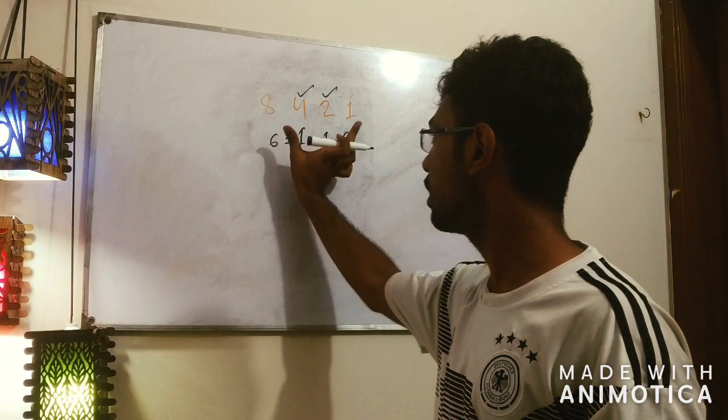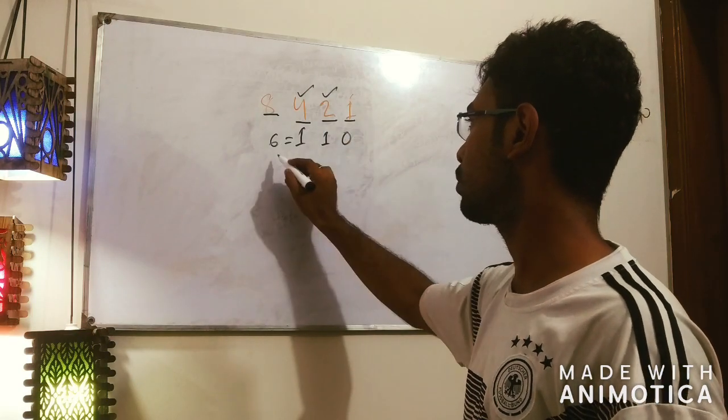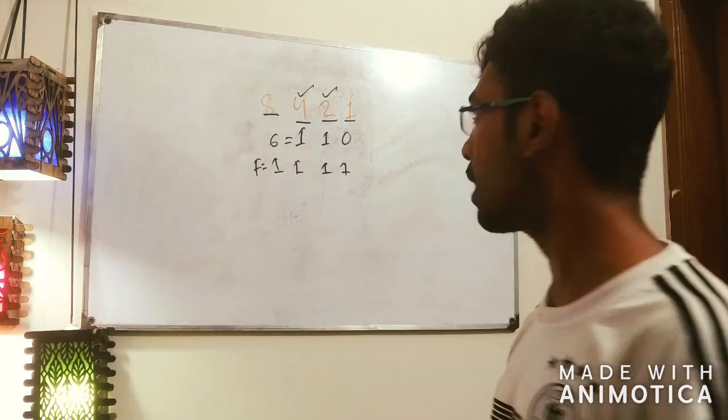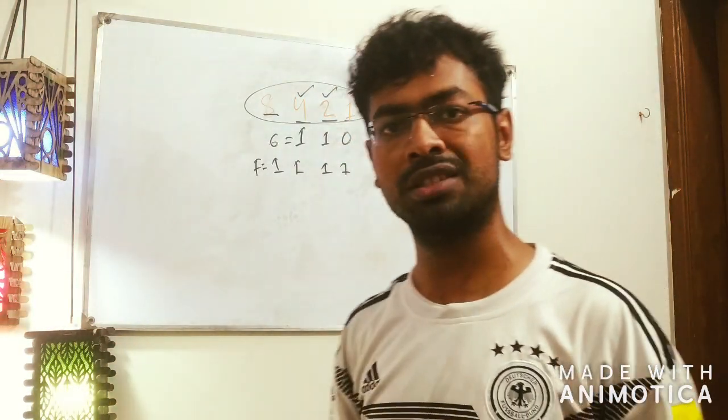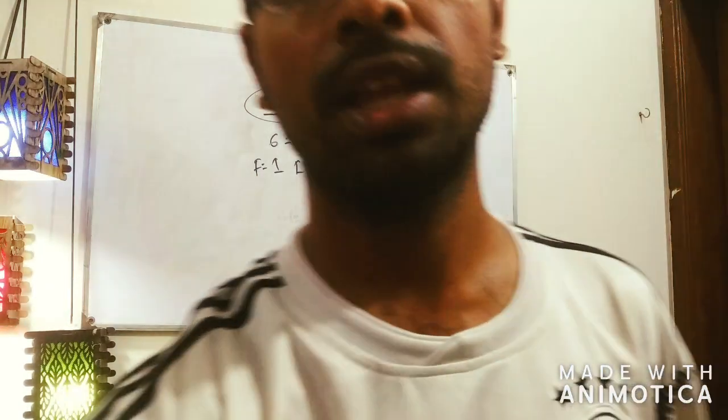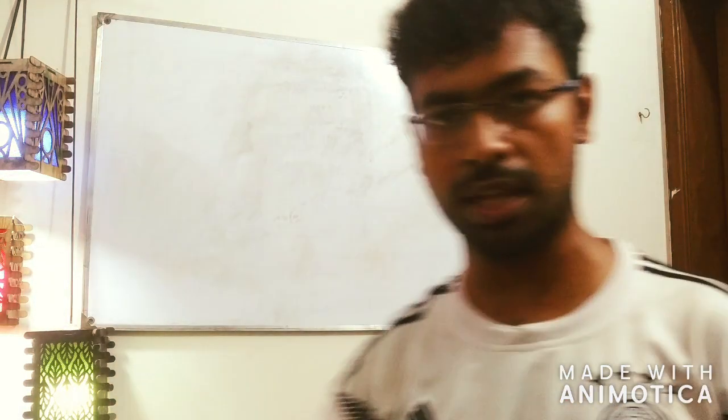Here we have the shortest binary and the highest binary number. We have the proper binary number. Let's see if we have binary, octal, and octal, we can see it in this way.